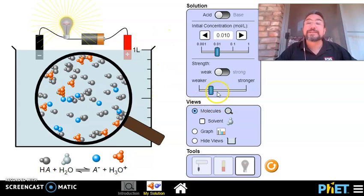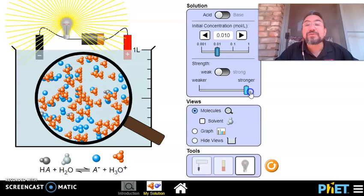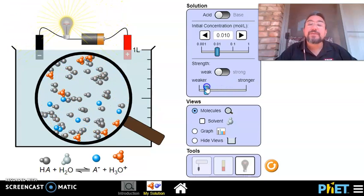First of all, the strength. The stronger your acid or your base is, the more you're going to have conductivity. The weaker your base or your acid are, the less conductivity there's going to be.